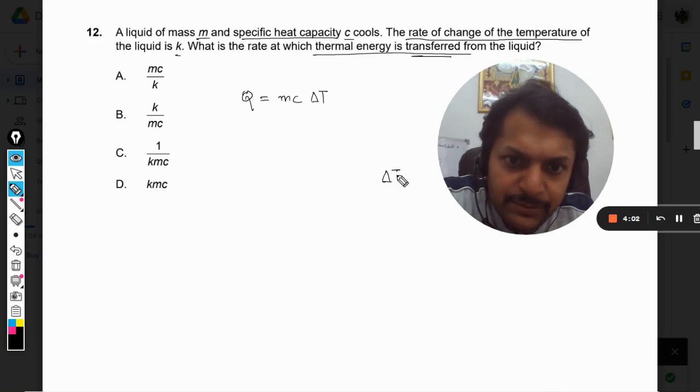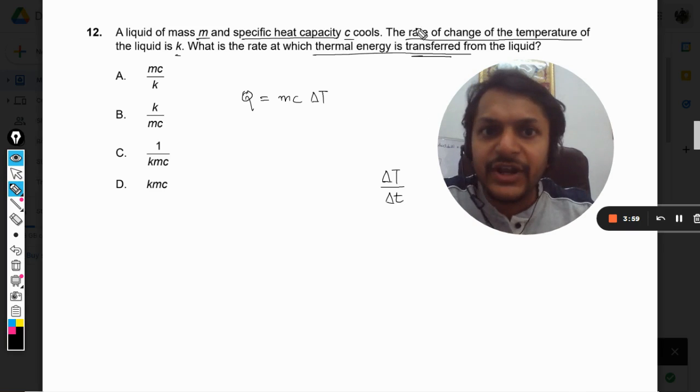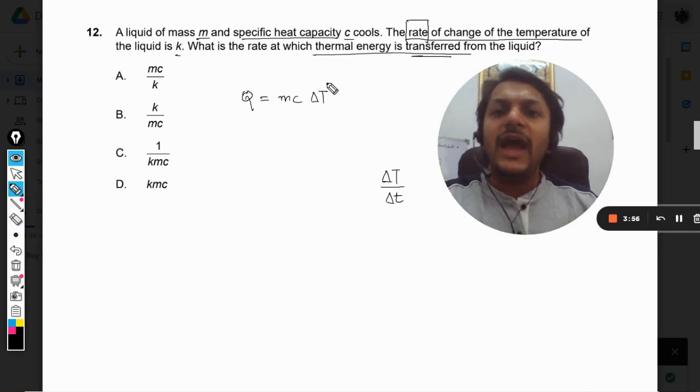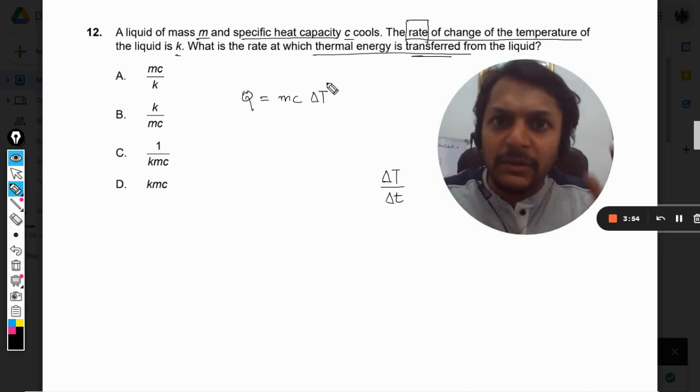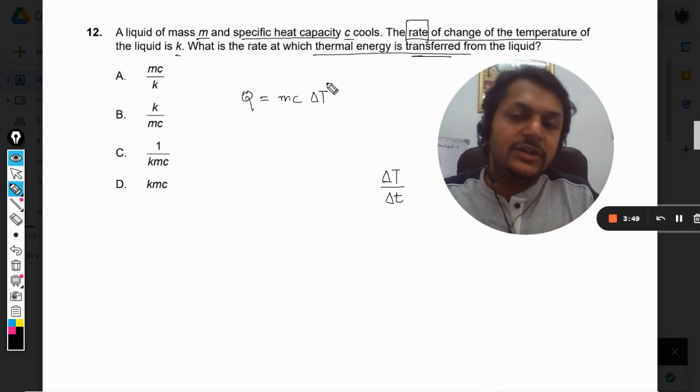It means the change in temperature divided by change in time. So this becomes rate. Rate means anything divided by the time. Wherever you see rate—rate of change of mass, rate of change of velocity, rate of change of temperature.